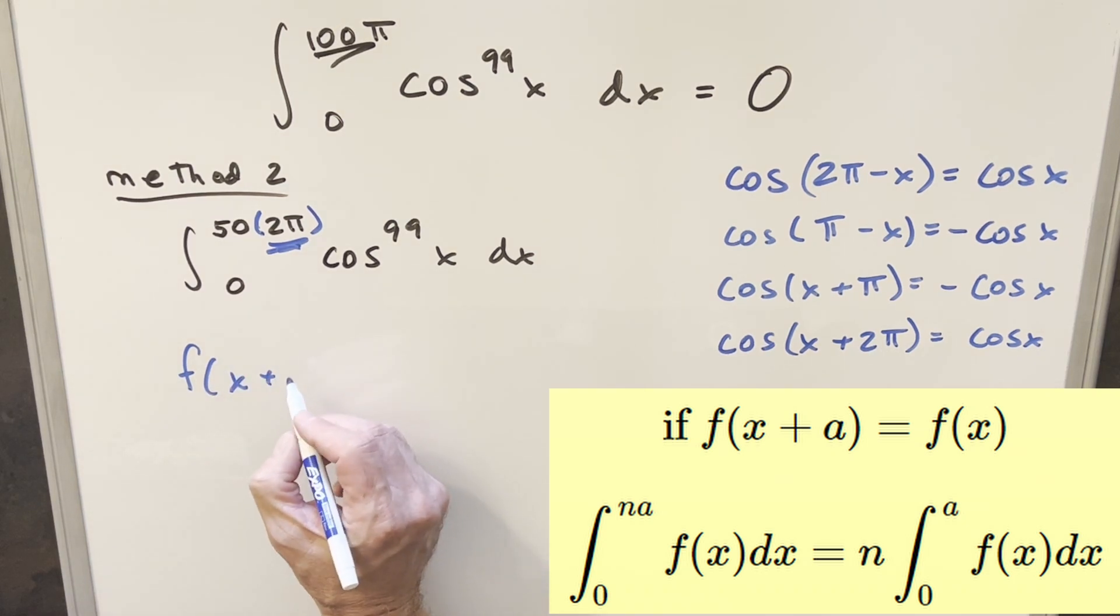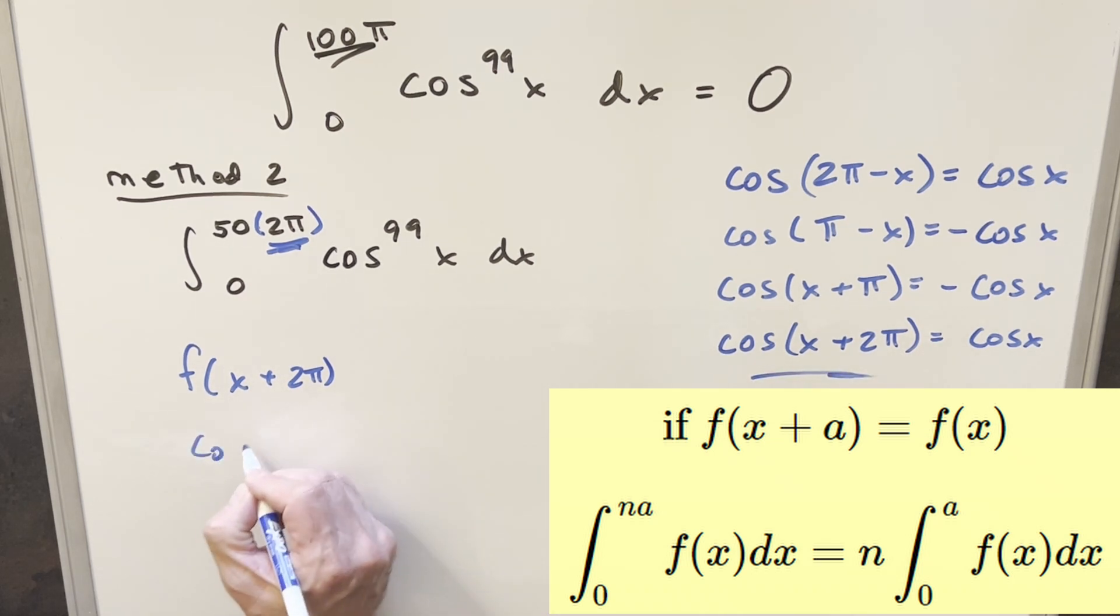And the check we need to do is just f of x plus our a value, which is 2 pi. So what we really need is this one, we need cosine x plus 2 pi for our check. And we want this to be equal to f of x.